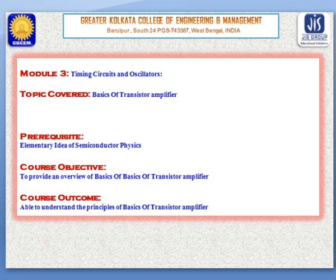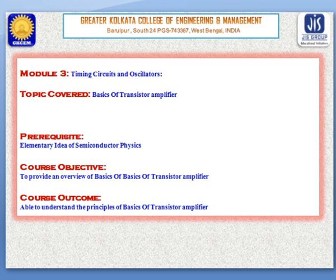The topic I will discuss is Basics of Transistor Amplifier, under Module 3: Timing Circuits and its Operations, and Oscillators. The pre-requisite for these topics is an elementary idea of Semiconductor Physics. The course objective is to provide an overview of Basic Electronics Engineering and the Basics of Transistor Amplifier. After completion of this topic, students will be able to understand the Principle of Basics of Transistor Amplifier.